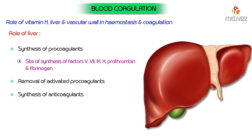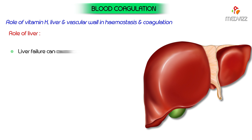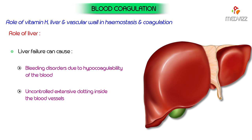The liver also removes activated pro-coagulants from the blood, and synthesizes anticoagulants like heparin, antithrombin 3, and protein C. Liver failure can cause bleeding disorders due to hypocoagulability of the blood, as well as uncontrolled extensive clotting inside the blood vessels, where clotting is not only unwanted but dangerous.